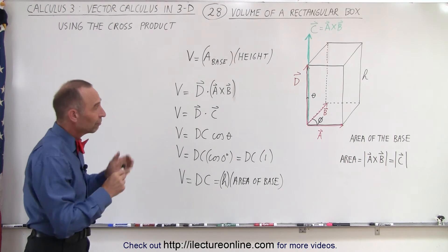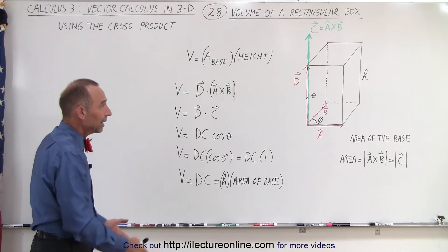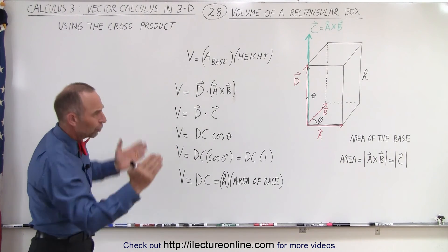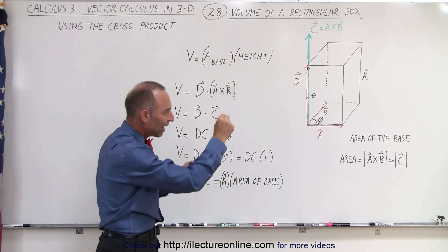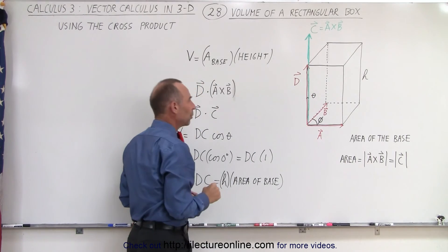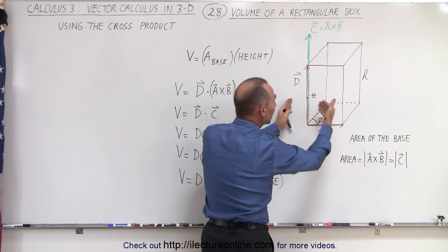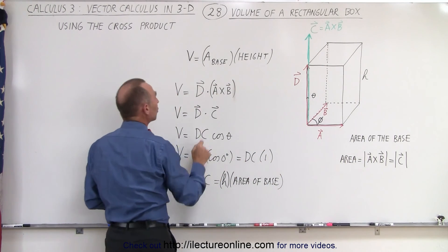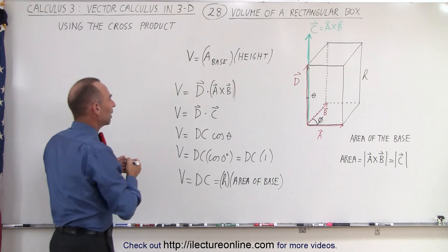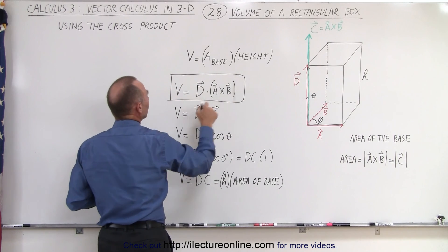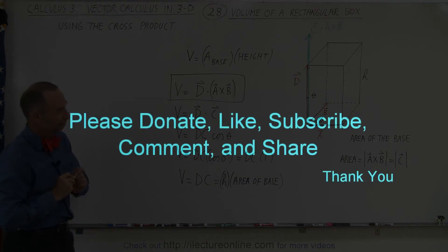To find the volume of a cube in three-dimensional space, regardless of its orientation, all we need to know are the locations of the points of the rectangular box. We define vectors along each of the three sides, then take two of the vectors — it doesn't matter which two, whether B and D, or A and D with B as the third — take the cross product of those two, then take the dot product of that result with the third vector, and that gives you the volume. So basically: do the cross product between two vectors, take that result, and do the dot product with the third vector. Thank you very much.